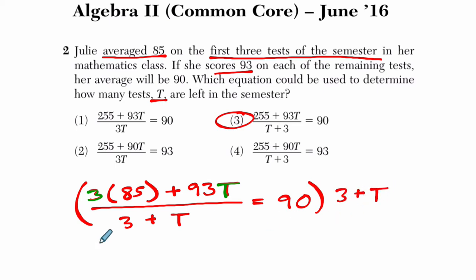And I can see, does my equation actually work? So if I multiply both sides by three plus t, I get what? Well, three times 85 is 255. Sorry, I should have pointed that out. It's 255 plus 93t. On this side, the three plus t's will cancel out.